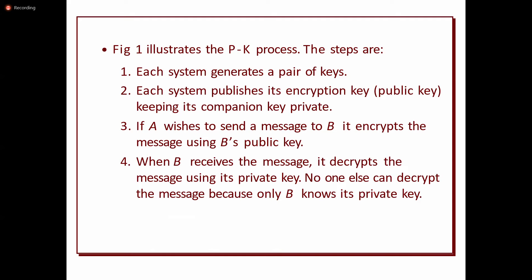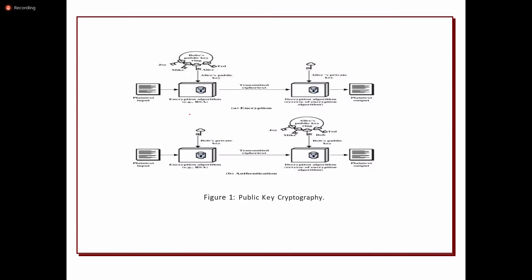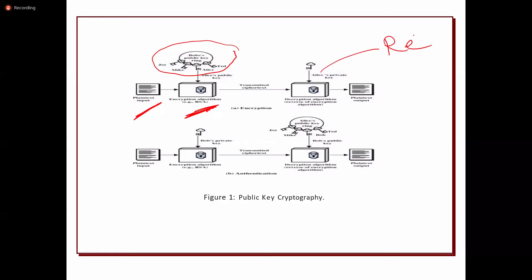The scenario of a public key cryptosystem is as follows: given a plaintext, it applies the encryption algorithm. While applying the encryption algorithm, it uses the key publicly — this is Bob's public key, where Bob is the receiver. So for encryption it uses Bob's public key, and whatever ciphertext is generated will be transmitted. At the receiver side, the decryption will use the receiver's private key.